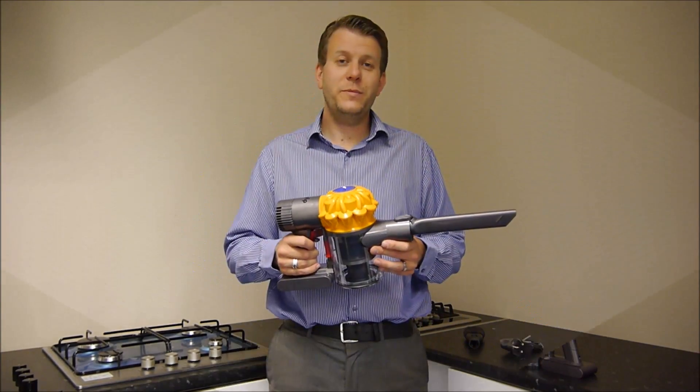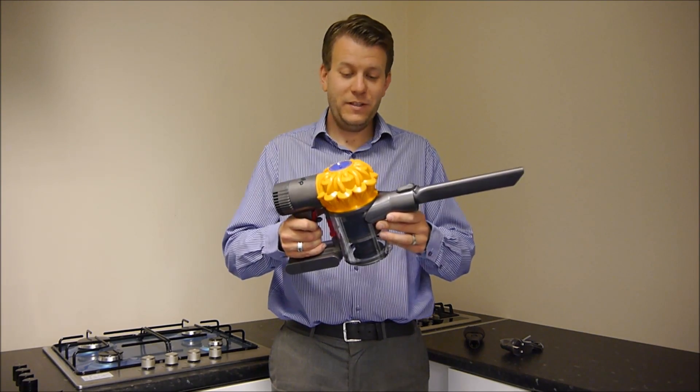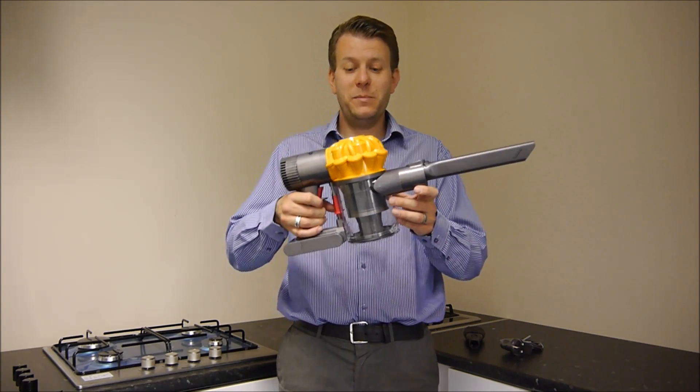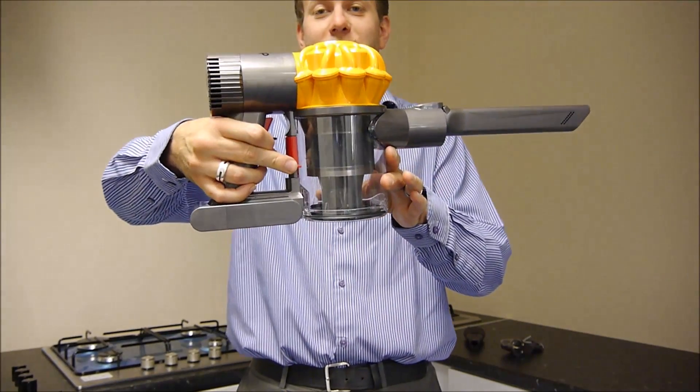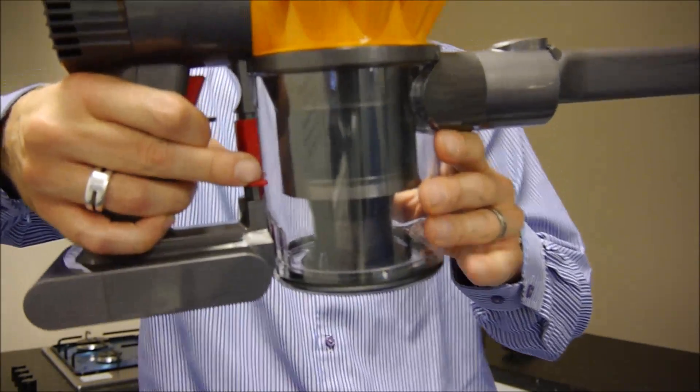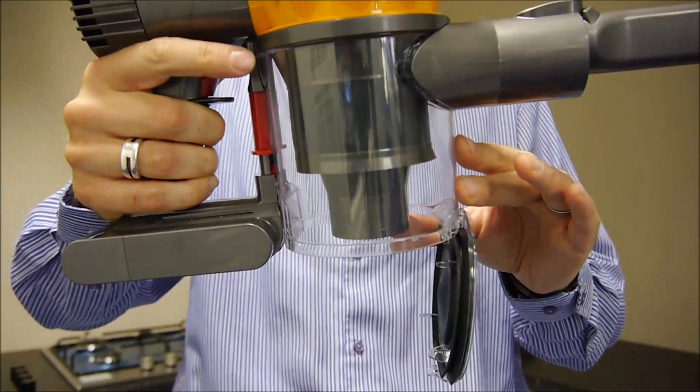When it comes to the maintenance of this cleaner, it's very easy. First of all, to empty the bin, all you do is press this button here. I'll just get a bit closer to show you, and the bottom of the bin drops out.